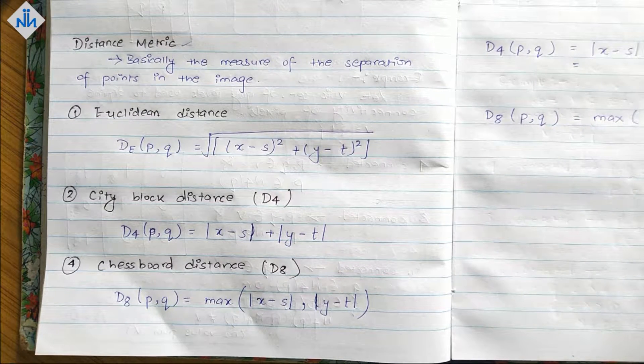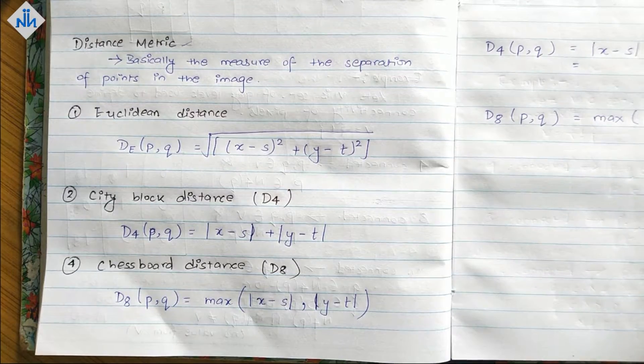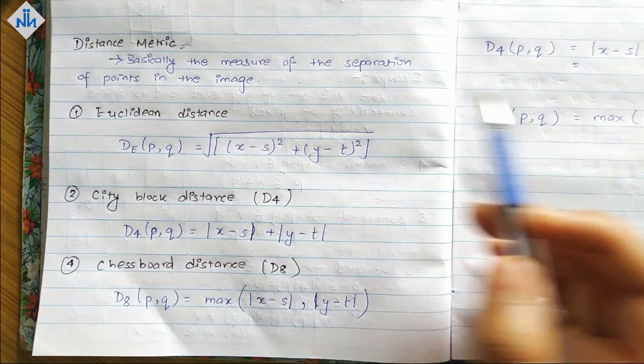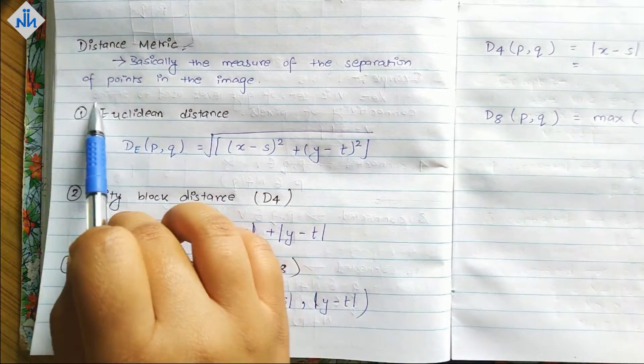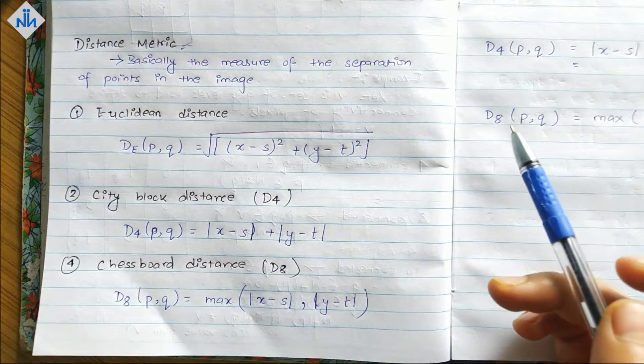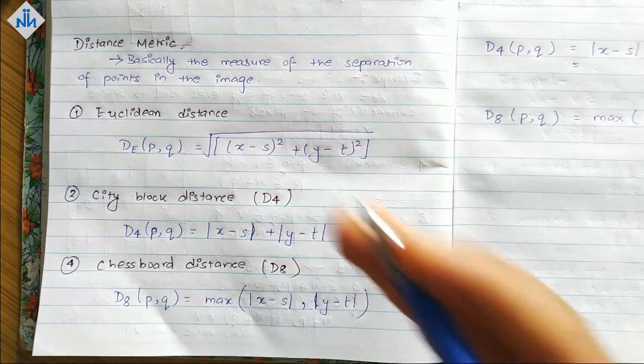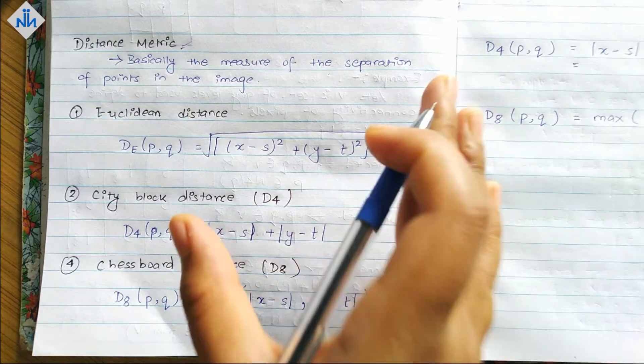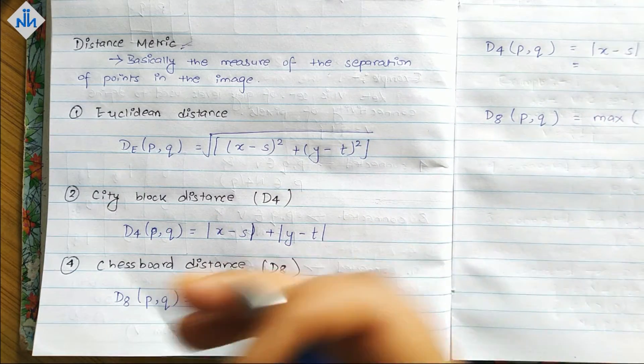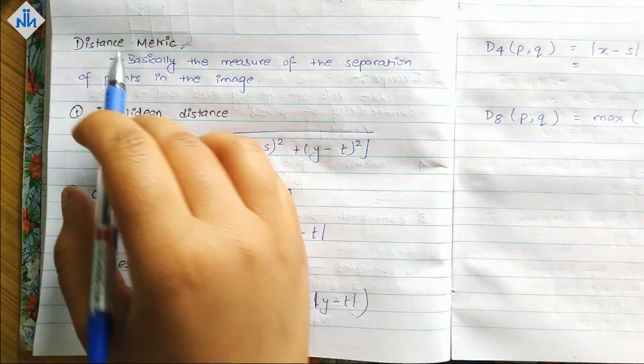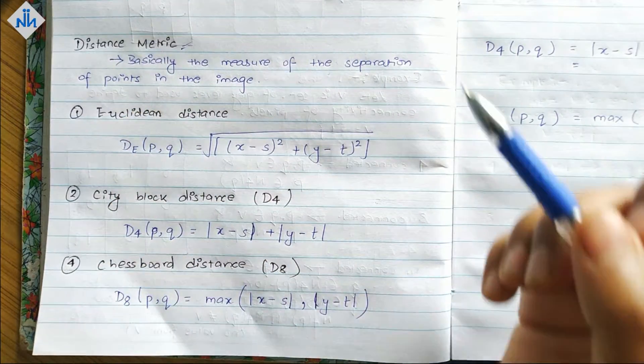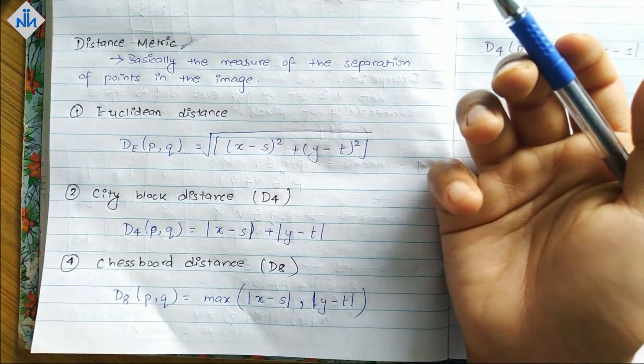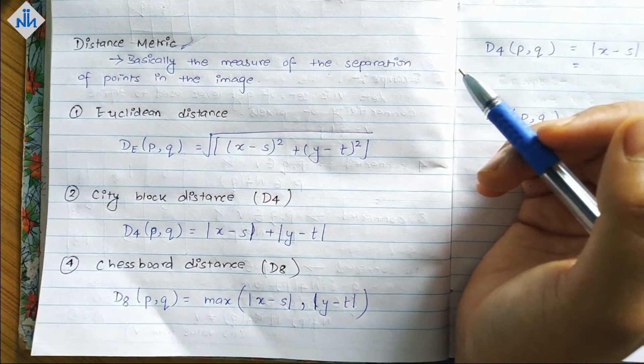Hello everyone and welcome back to Notes Naka. In this video we're going to talk about distance metric. What is distance metric? Basically, the measure of the separation of points in an image is distance metric. The distance between two points - what is the maximum distance, minimum distance - this normal term distance is a distance metric and it is defined for a digital image.